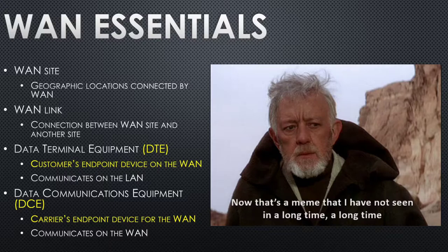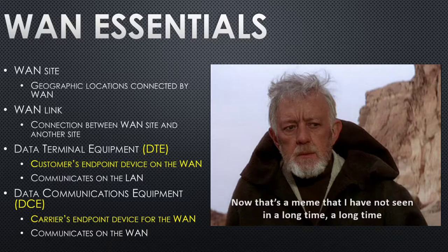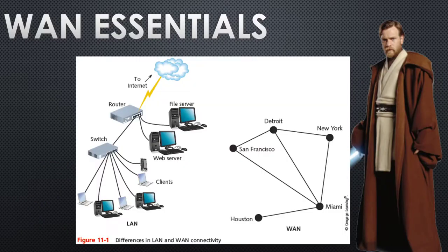Here's a part I always mix up. Your endpoint — like John A. Logan's equipment that connects us to the internet — is our Data Terminal Equipment (DTE). 'Terminal' means the internet connection to the rest of the WAN technically ends there, and then we share it with everybody on campus. The last piece of the carrier's equipment between them and you is their Data Communication Equipment (DCE). So yours is DTE, theirs is DCE.